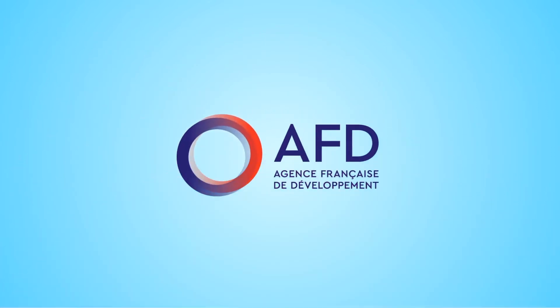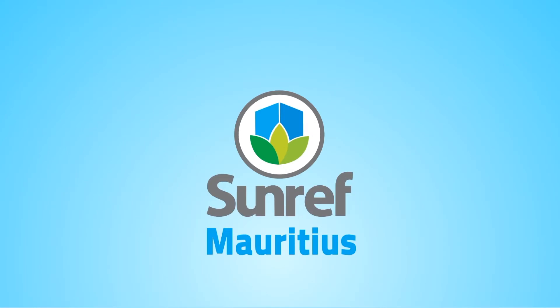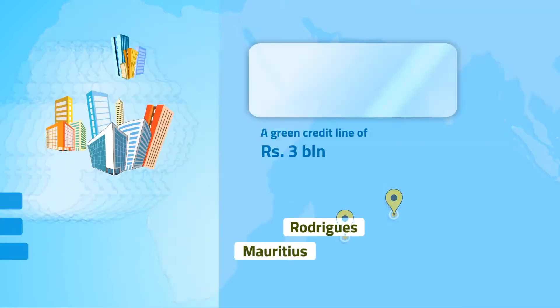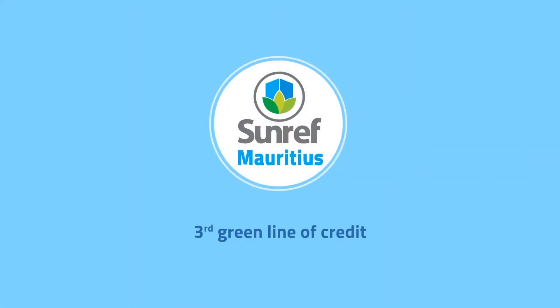This is why the Agences Française de Développement, AFD, has created Sunref Mauritius, a 3 billion rupees green credit line which aims to promote climate change mitigation and adaptation as well as gender equality in the workplace. It is the third green line of credit set up by AFD in Mauritius.